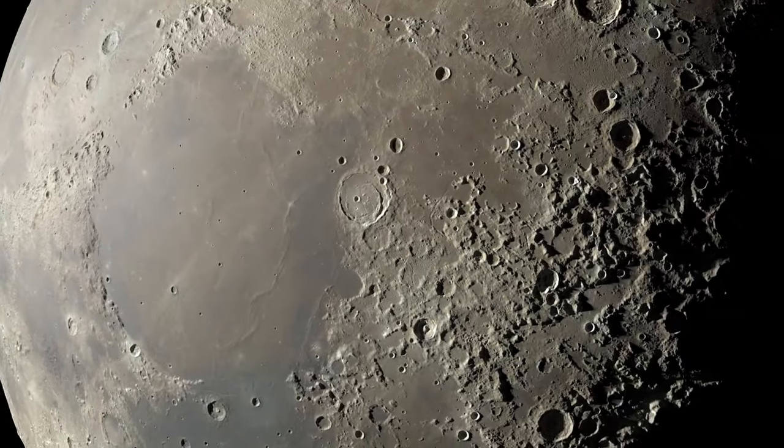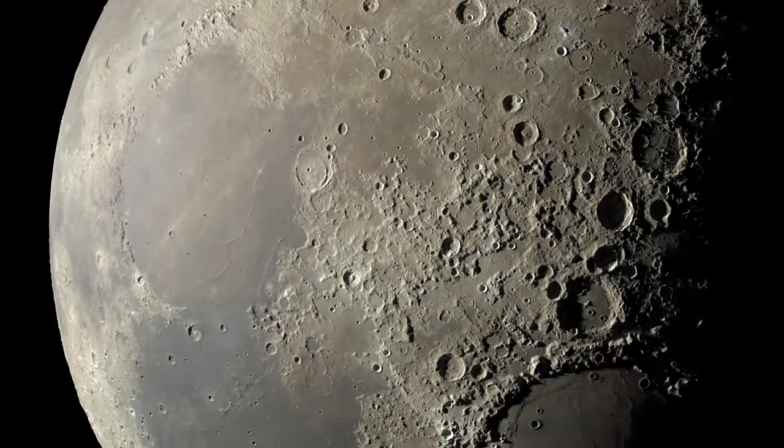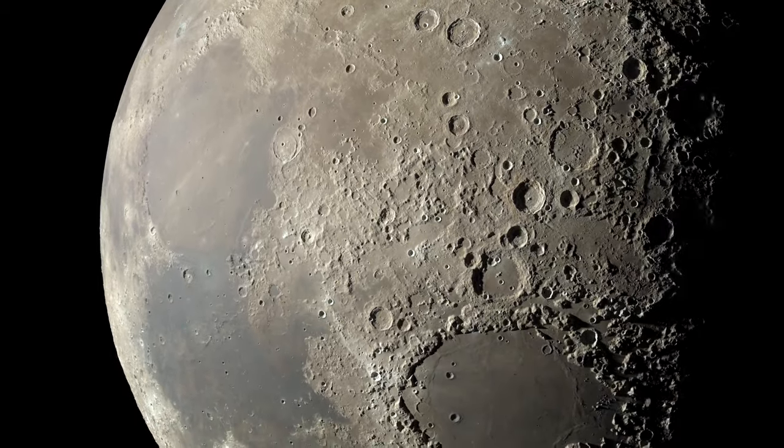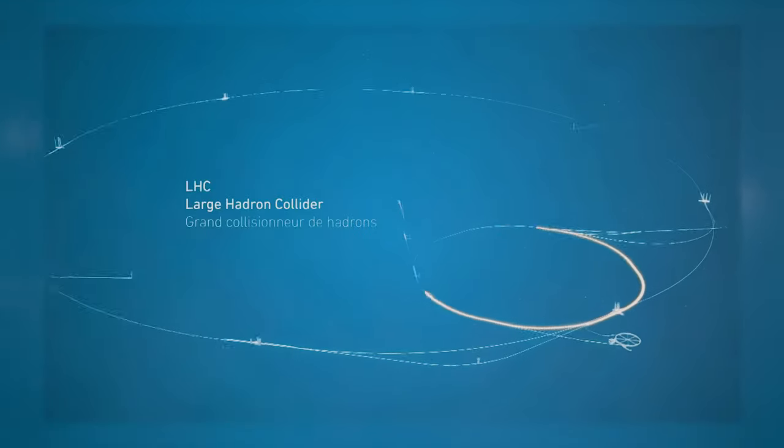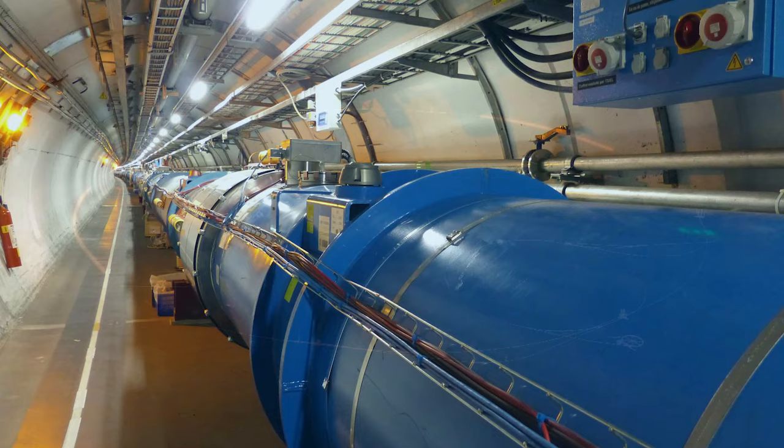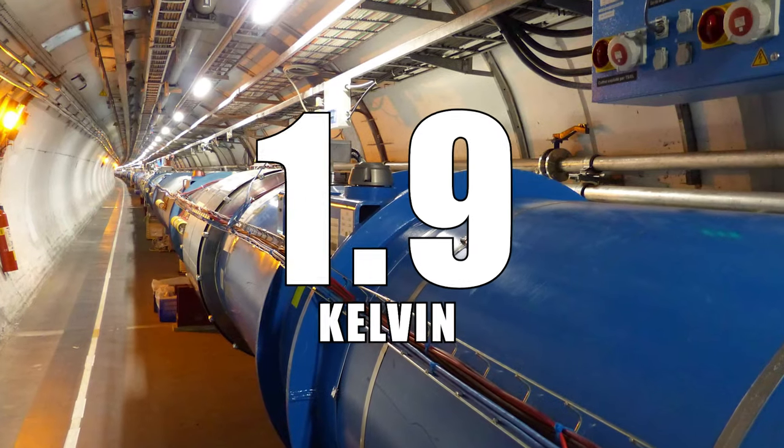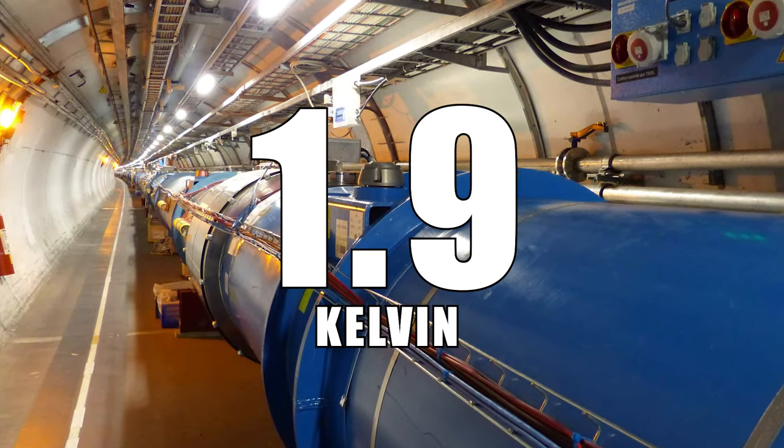The LHC's beamline has a vacuum similar to that on the Moon and provides a thermal shield, limiting the energy transfer from the beam to the cold mass of the magnets, which is cooled to 1.9 Kelvin, which is almost absolute zero.